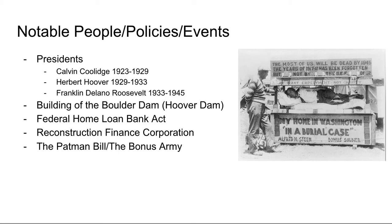On policies and events: Hoover oversaw the building of Boulder Dam, now known as Hoover Dam, the biggest dam in the United States. There's also the Federal Home Loan Bank Act — the government trying to get involved in home ownership and managing mortgages. The Reconstruction Finance Corporation we'll talk about later. The Patman Bill Bonus Army is notable: World War I veterans had been promised a government bonus payout in 1945, but when the Depression hit they wanted that money immediately. Thousands of World War I veterans marched on Washington demanding these bonuses from Congress, and it ultimately ended in a violent riot.